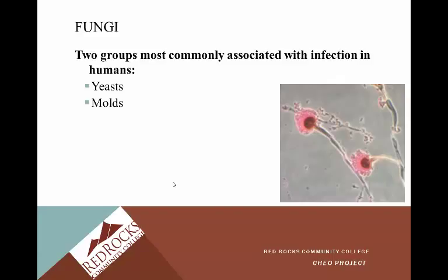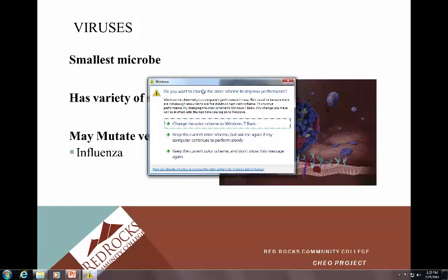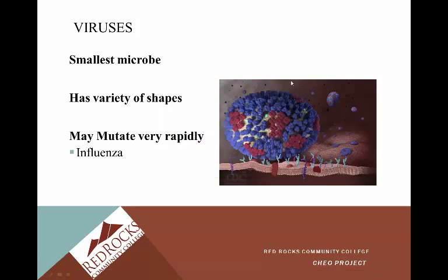Fungi: the two groups most commonly associated with infection in humans are yeasts and molds. Viruses are the smallest microbe and have a variety of shapes. What's really important to remember about viruses is that they mutate very rapidly. A great example is influenza — the flu. That is why people have to get a flu vaccine every year, because the virus mutates so rapidly that they have to provide a new vaccine every year to keep up with providing current immunity.